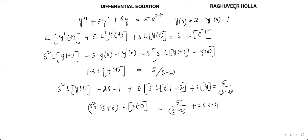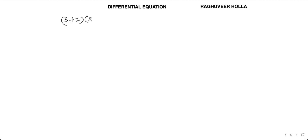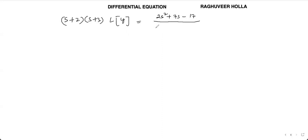Factoring the left side as (s+2)(s+3)·L{y}, we get L{y} = (2s² + 7s - 17) / [(s-2)(s+2)(s+3)].